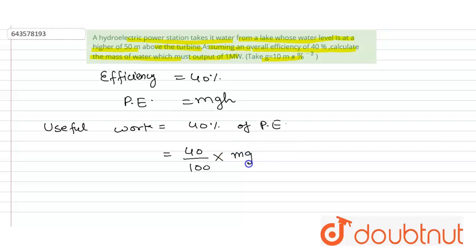And what is potential energy? mgh. So put the value: 40 divided by 100 times m times 10 times 50.